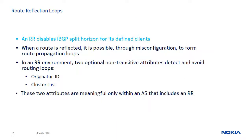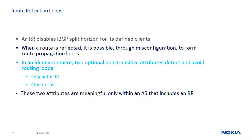A route reflector removes the full mesh requirement by disabling iBGP split horizon for its client peers. When an iBGP learned route is reflected to another iBGP peer, the AS becomes vulnerable to route update loops due to possible misconfiguration. Two new optional non-transitive attributes are introduced in an RR environment for loop detection and prevention: originator ID and cluster list. These attributes exist only when an RR is configured and remain internal within the AS — they are not propagated to external peers.